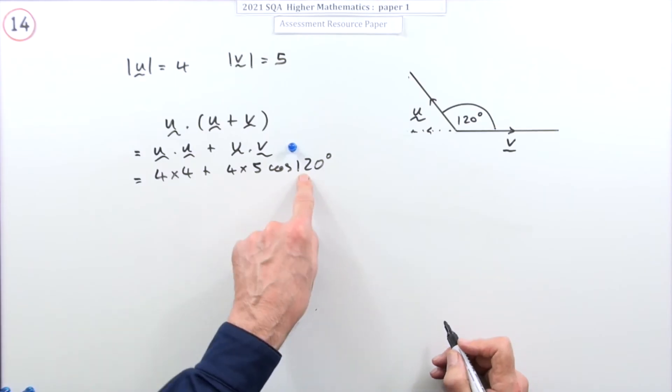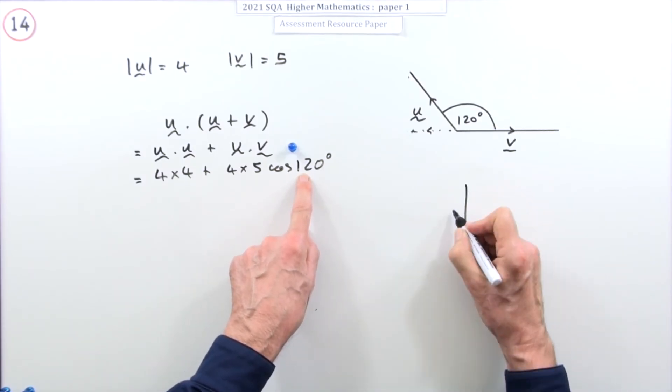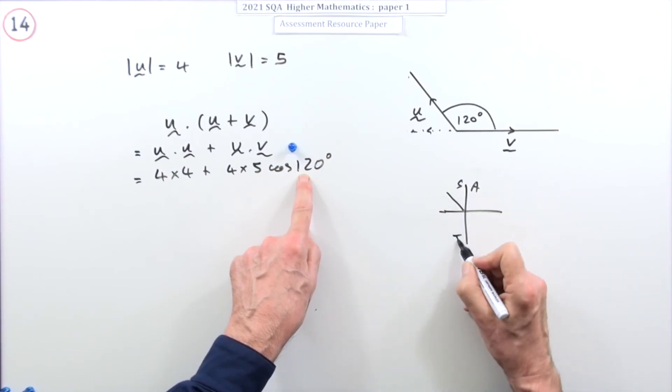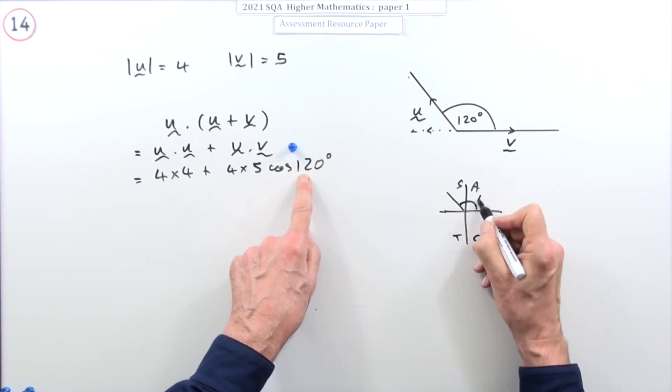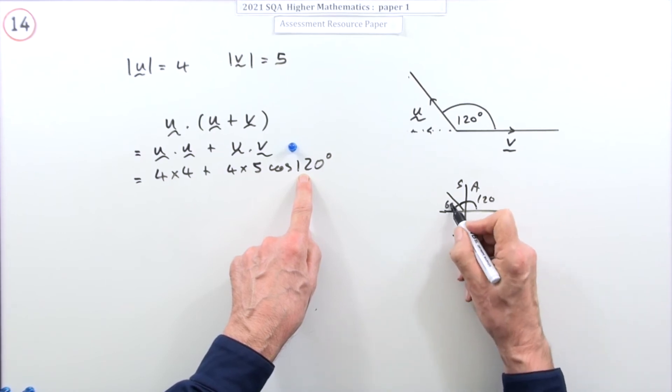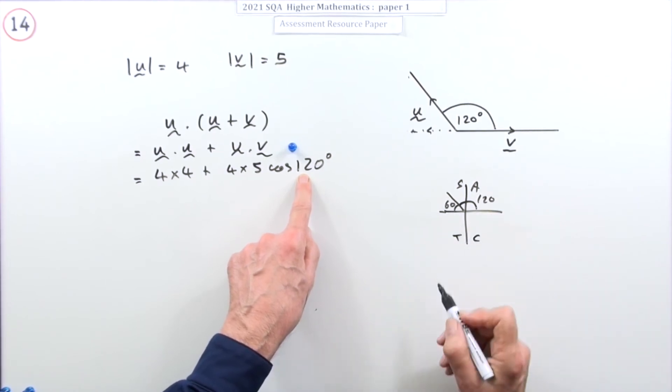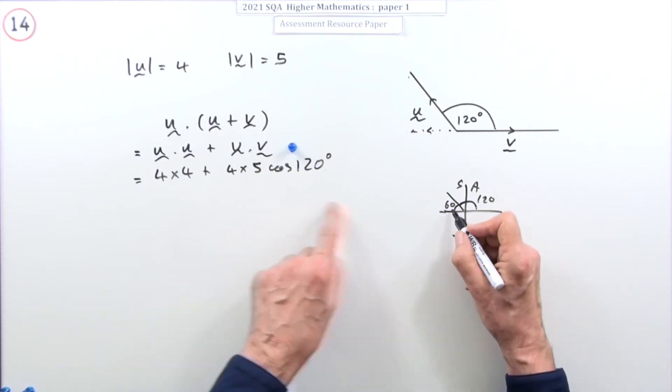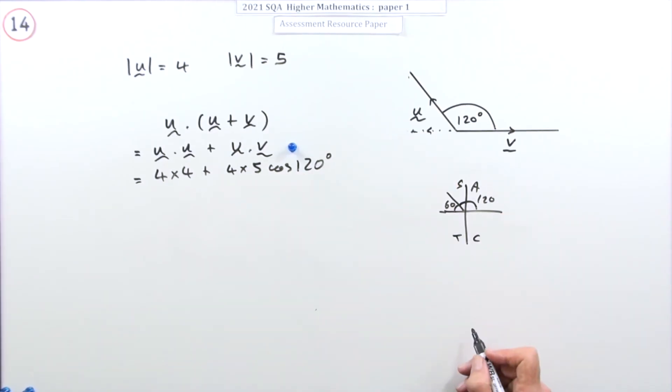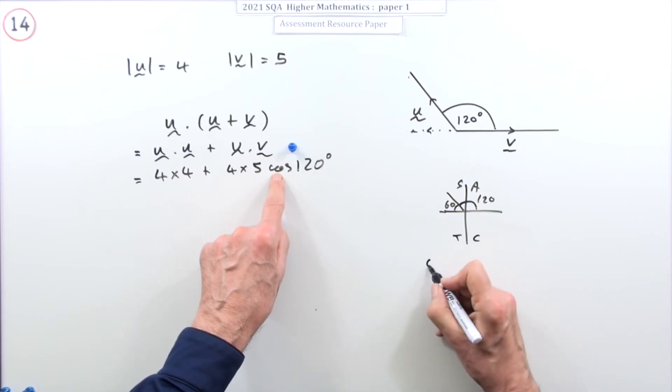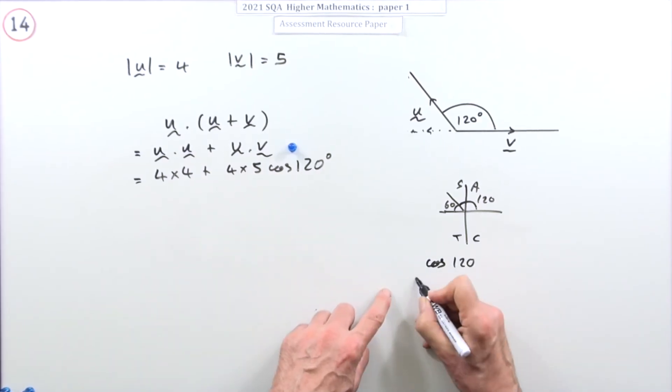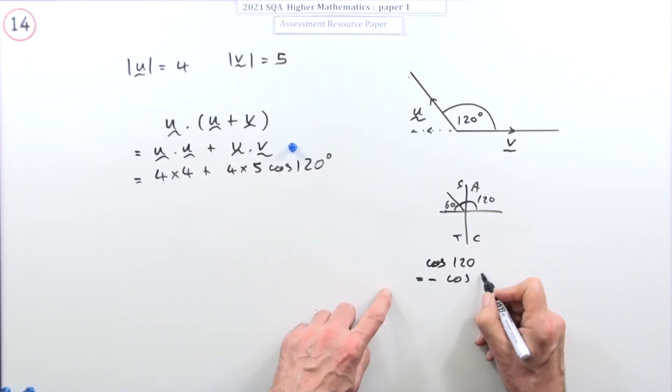So now you've got to figure out cos 120°. Well if you're not too sure what that is, you can just quickly sketch it at the side. 120° is here. All sine tan cos. So if that's 120°, you've got 60° left. So cos 120° is the same as the cosine of 60° except it's negative here. So cos 120°, I'll just put it all down here, is equal to negative cos 60°.